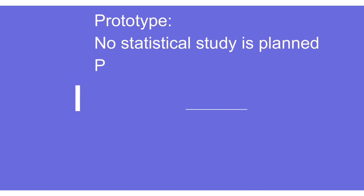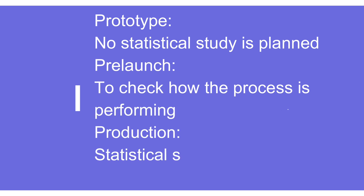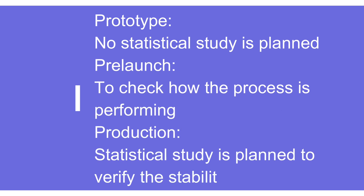In the prototype control plan, since we are making only a couple of pieces, there is no statistical study. In the pre-launch control plan, we do observe how the process is working and what kind of stability it is giving. In the production control plan, there is a requirement that when doing an SPC study, we need to see how the process is performing based on upper and lower control limits.